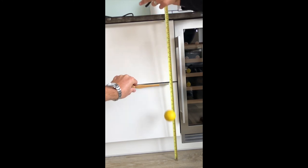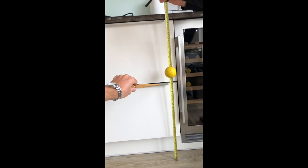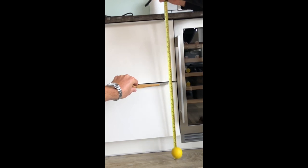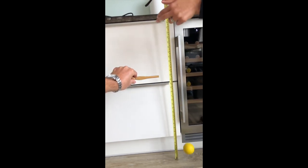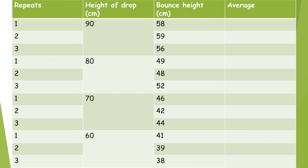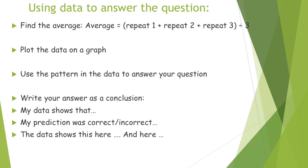We then tested the bounce height from when the ball was dropped at 80 centimetres, 70 centimetres, and 60 centimetres. Here are our results. We will now calculate an average and plot that data onto a graph. By using an average, we're making our data more reliable because we're taking more tests, so there's less chance for an anomaly. Once you've collected all your data, here are the final things you need to do to complete your experiment.